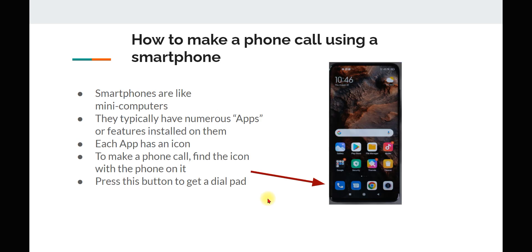How to make a phone call using a smartphone. Smartphones are like mini computers. They typically have numerous apps or applications installed on them that allow you to access certain features. Each app has an icon. To make a phone call, find the icon with the phone on it — that would be this one. Press this button and then you get a dial pad.